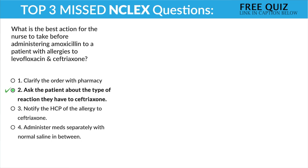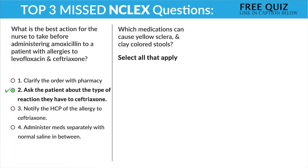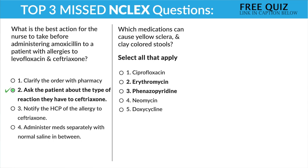Question two: which medication can cause yellow sclera and clay-colored stools? Select all that apply. The big thing here is liver toxicity — key term is jaundice. Yellow sclera of the eye or skin and clay-colored stools. Erythromycin and phenazopyridine — those are the two that are most liver toxic. All the other options are not as liver toxic.